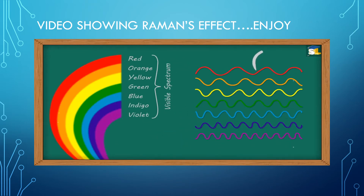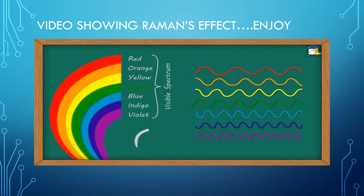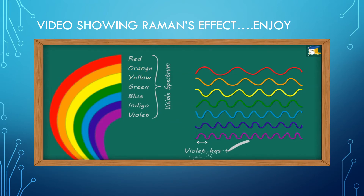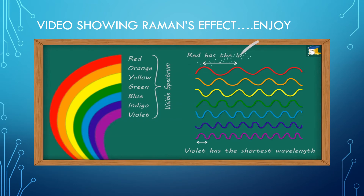The wavelength is the distance between consecutive crests or consecutive troughs in a wave. In a rainbow, as we move from violet to red, the wavelength of colors increases. Violet has the shortest wavelength.